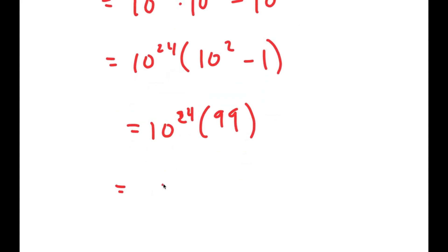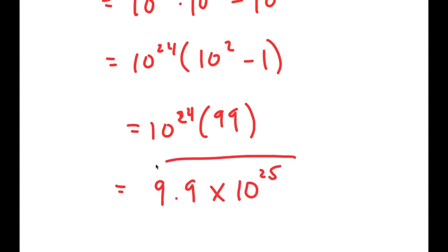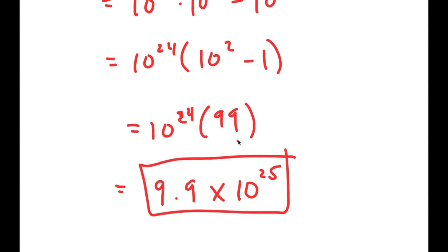And I'm going to write this in scientific notation, which turns into 9.9 times 10 to the power of 25. However, this is also the same thing as 99 with 24 zeros after. So this is my answer.